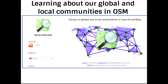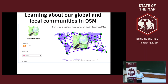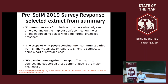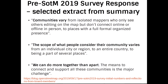Learning about our global community and local communities is actually very important in OSM. You may be aware of a current survey that is asking questions of the global and local communities in OpenStreetMap. A very nice summary of some of the responses showed that communities can vary from isolated mappers who don't necessarily connect with others, to places where there are fully organised mapping presences. There's also variation in scope from cities to regions to countries, but crucially a community can do a lot more work together than apart — which means there should be an effort to connect and support communities, though that is a major challenge.